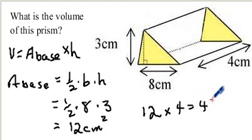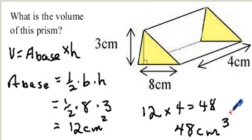12 times 4 is 48. So our volume is 48 centimeters cubed. Keeping in mind that there's three dimensions we're talking about here, so we use cubed. So again, just like any other prism, area of the base times the height.